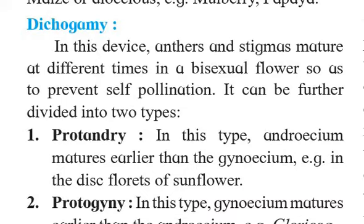To prevent self-pollination, the androecium — that is, the anther and filament, also called the stamen — is developed first in the bisexual flower. After the release of pollen grains, after some time, maybe after some days, the female reproductive organ will be developed.